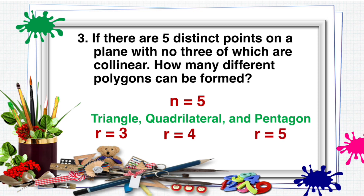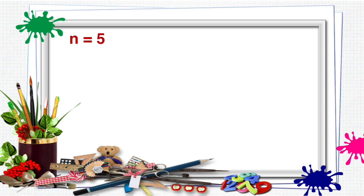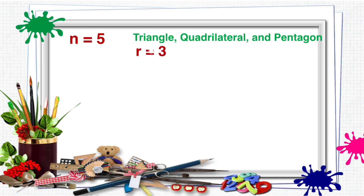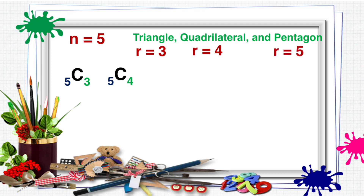Again, N is equal to 5. From these points, we need to get the total number of polygons consisting of triangle, quadrilateral, and pentagon. For triangle, R is equal to 3 — that is combination of 5 taken 3 at a time. For quadrilateral, R is equal to 4 — that is combination of 5 taken 4 at a time. And for pentagon, R is equal to 5 — that is combination of 5 taken 5 at a time.